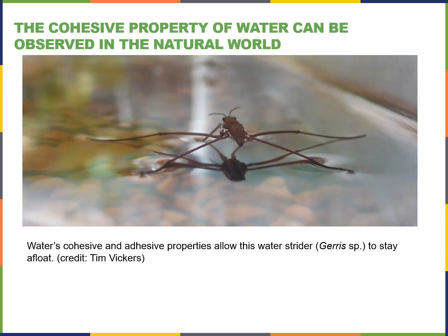That's why certain bugs can seem to float on the surface of water. If you look at the ends of their legs, you see little dimples — they spread their weight out in such a way that they don't disturb the cohesive or adhesive properties of water. The surface tension is maintained and they can run across the surface. No other liquid that we know of will allow this to occur.